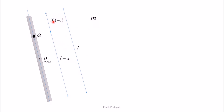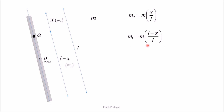For the upper portion of the rod from the hinge point, the mass will be m2, which is equal to m times x divided by l. Similarly, for the lower portion from the hinge point, the mass is m1, which is equal to m times (l minus x) divided by l. For the lower portion, the center of gravity is at this point, and for the upper portion, the center of gravity is at this point. The m1·g force acts from the lower center and the m2·g force acts from the upper center.